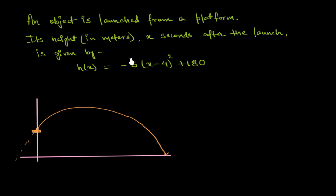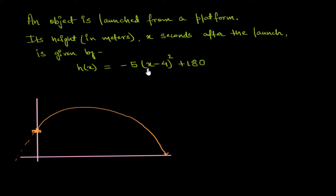If we look at this path, this is a quadratic equation which is in the vertex form. And if this is a quadratic equation, then this graph is a parabola shape.